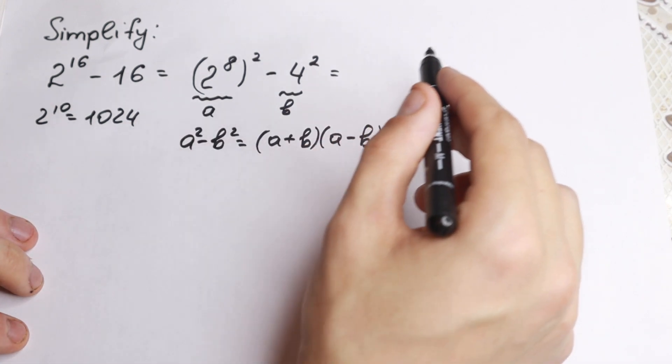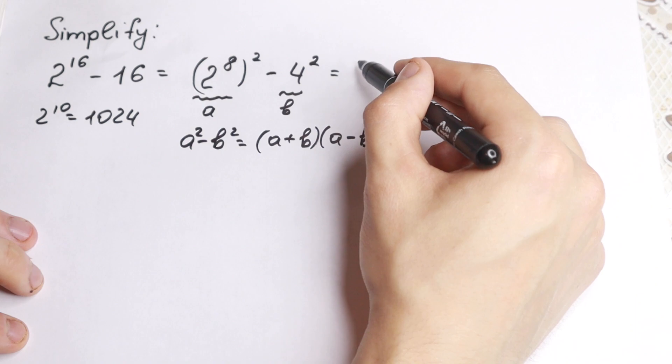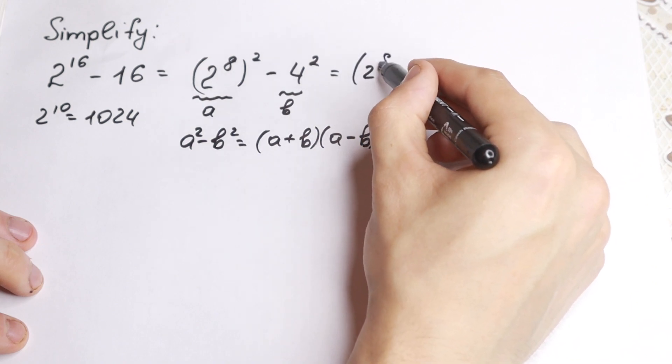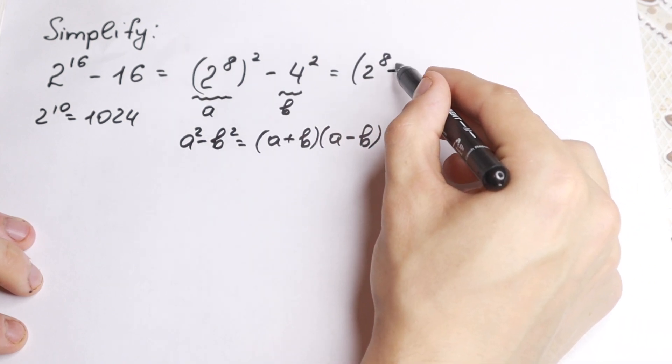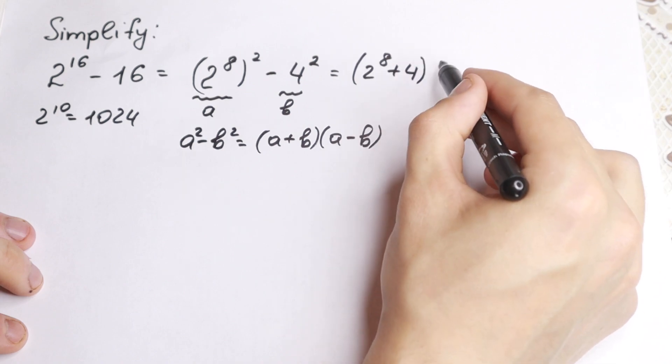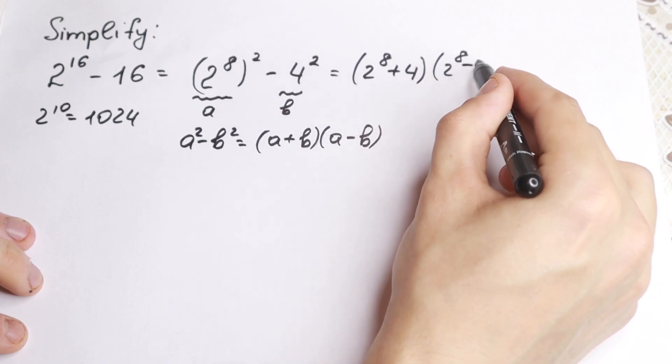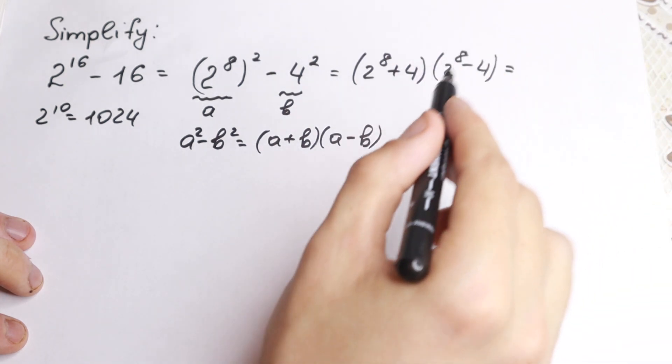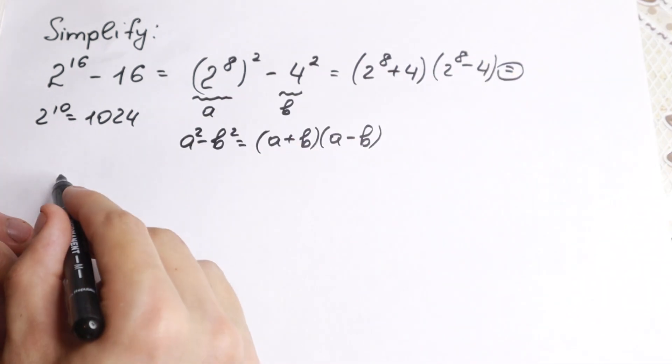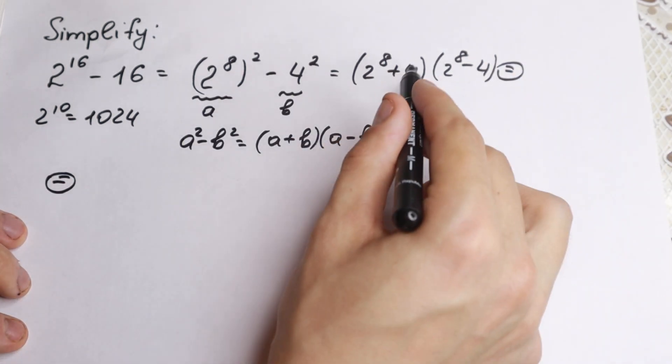a equals 2 to the 8th, so we have 2^8 minus 4, or let's start with plus, doesn't matter, and 2^8 minus 4. So we have this product. I'll write it right here on the bottom in the new line. We have this product.